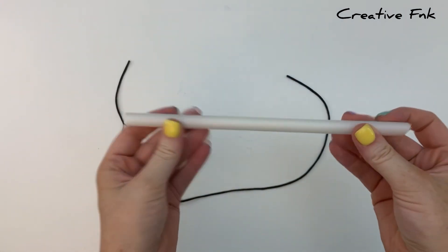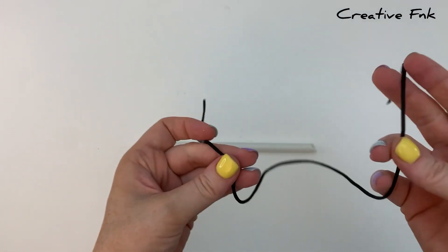It's called a barrel or tube knot because you use a little tube to wrap the thread around as you make your knot.